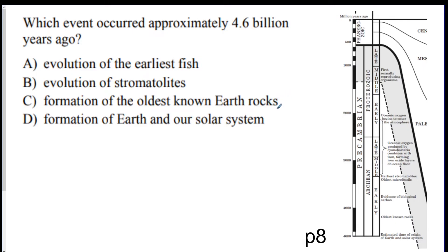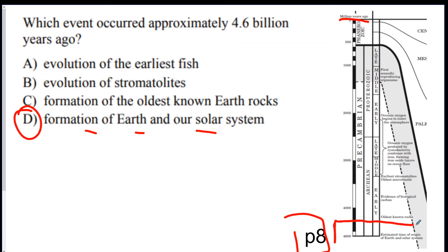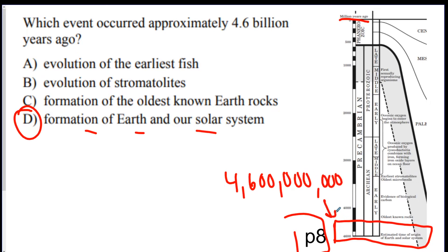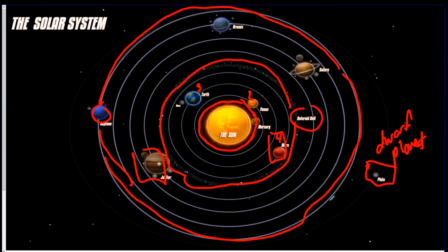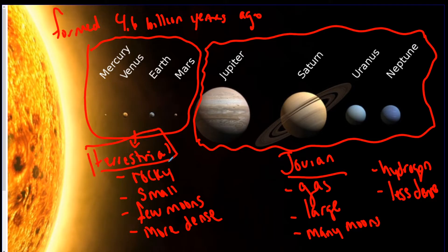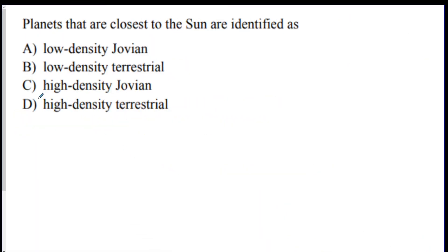So which event occurred approximately 4.6 billion years ago? The answer is the formation of Earth and our solar system. If you go to page 8 on your reference table, you can look at the timeline. It shows 4600 million years ago as the estimated time of origin of Earth and solar system — 4600 million is the same as 4.6 billion. For question two, planets closest to the sun are terrestrial and more dense because they're made of rock.